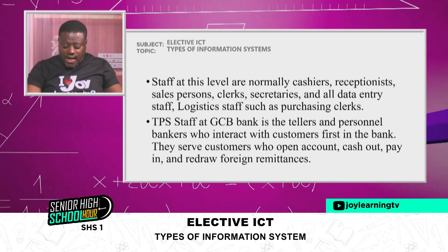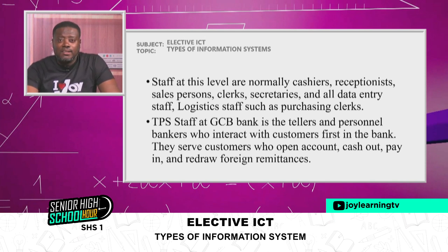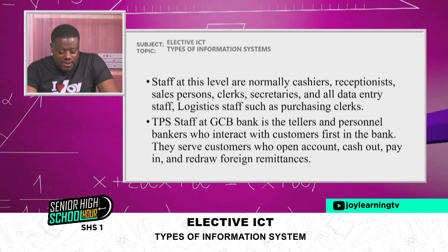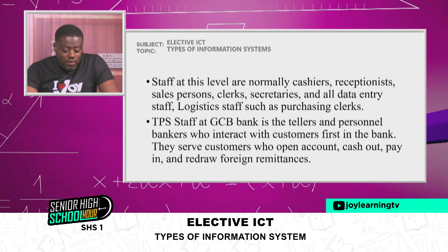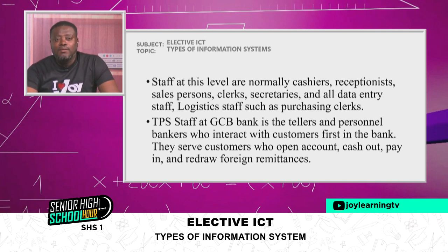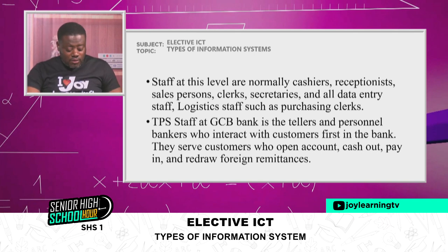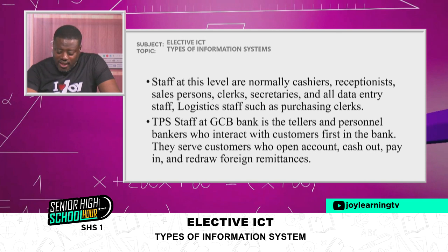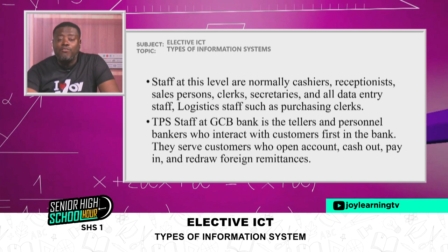Staff at this level are normally cashiers. In the GCB Bank, these are the tellers who interact directly with customers. In other organizations like hotels, we have receptionists, salespersons, clerks, secretaries, and all data entry staff. Logistics staff such as purchasing clerks also use this system. At GCB, the Transaction Processing System staff are the tellers and personal bankers who interact with customers first — serving customers who open accounts, cash out, pay in, and withdraw foreign remittances.